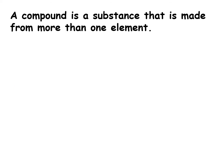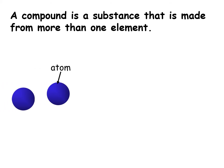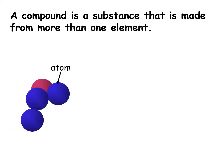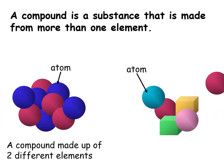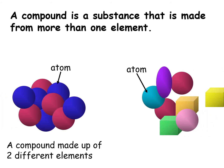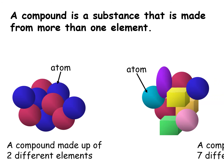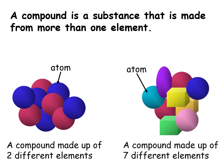A compound is a substance that is made up from more than one element. Here is an example — a compound made up of two different elements.